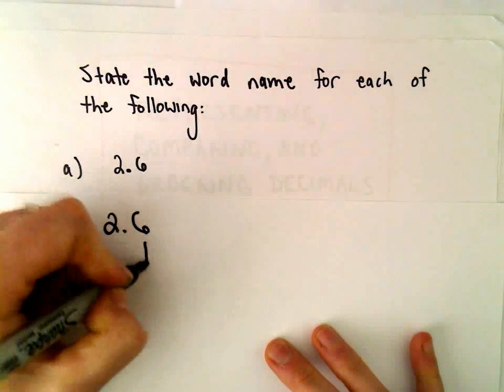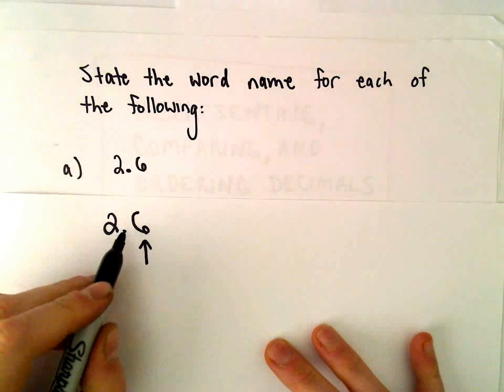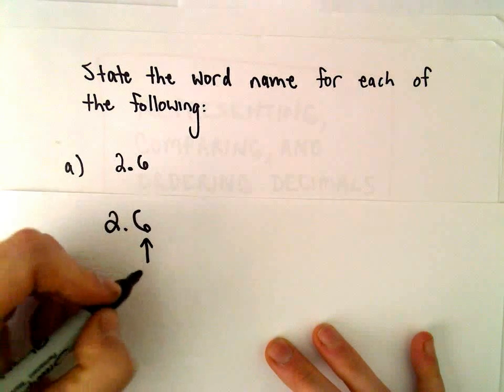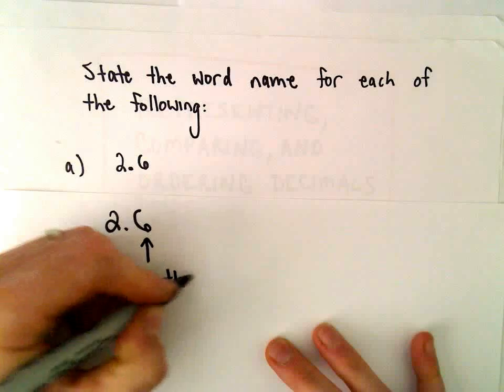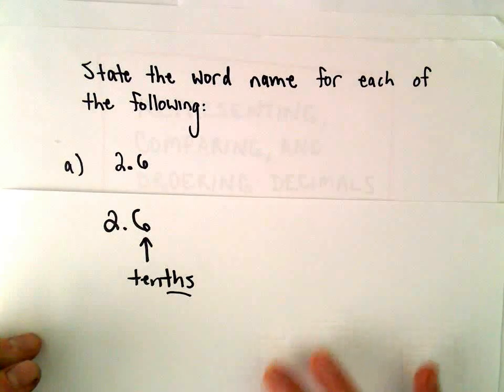So recall that if we move one decimal place, if we only go over one decimal place, that's the tenths. The tenths spot.